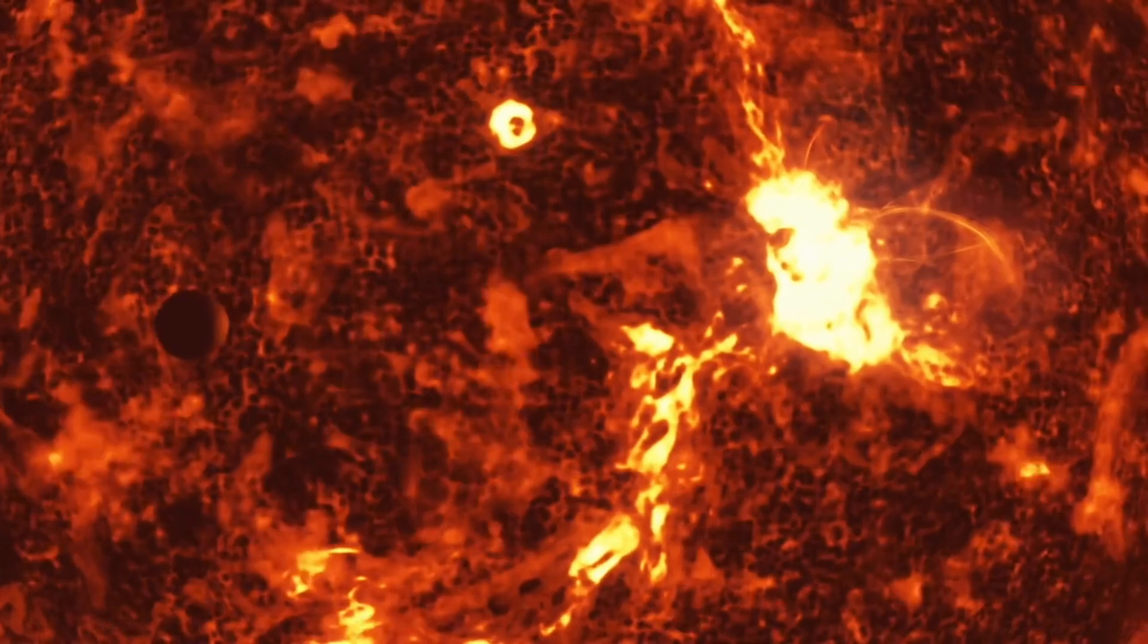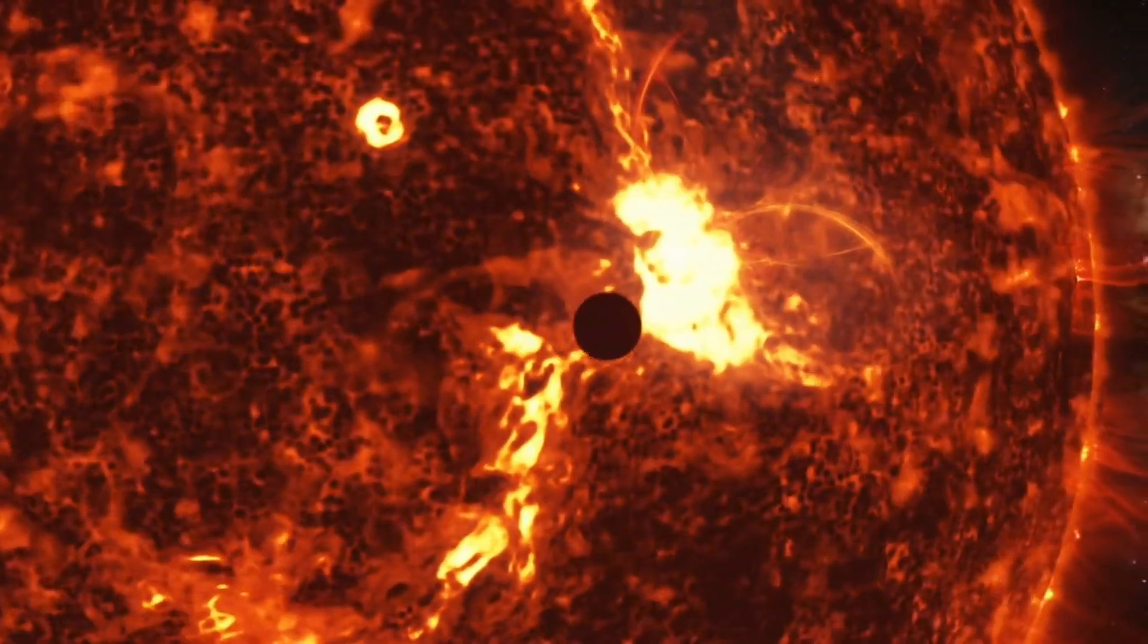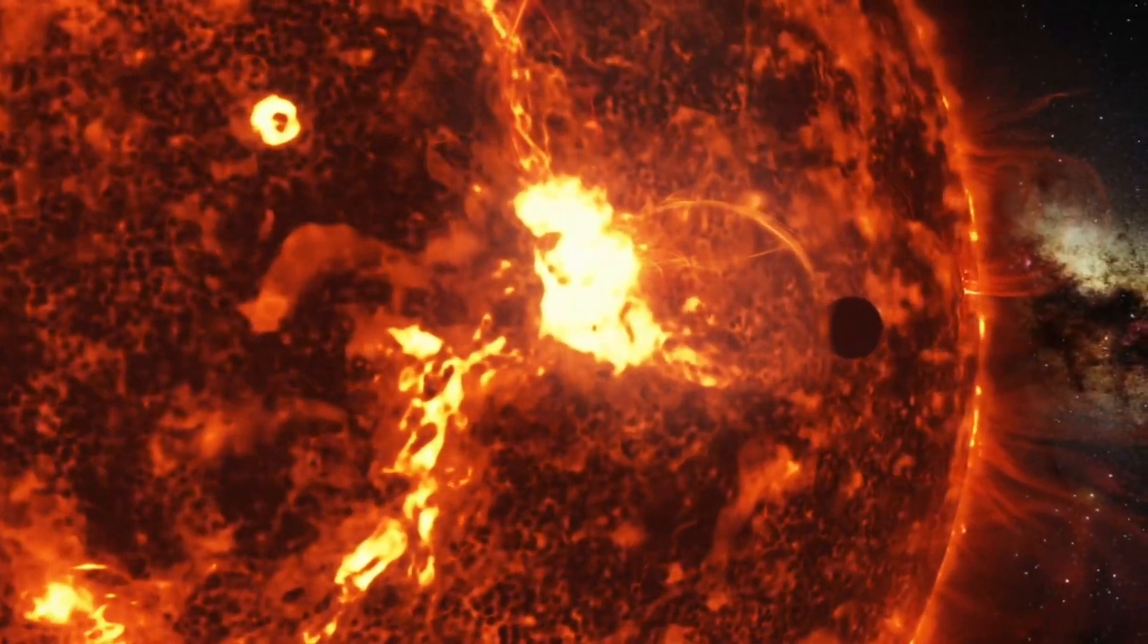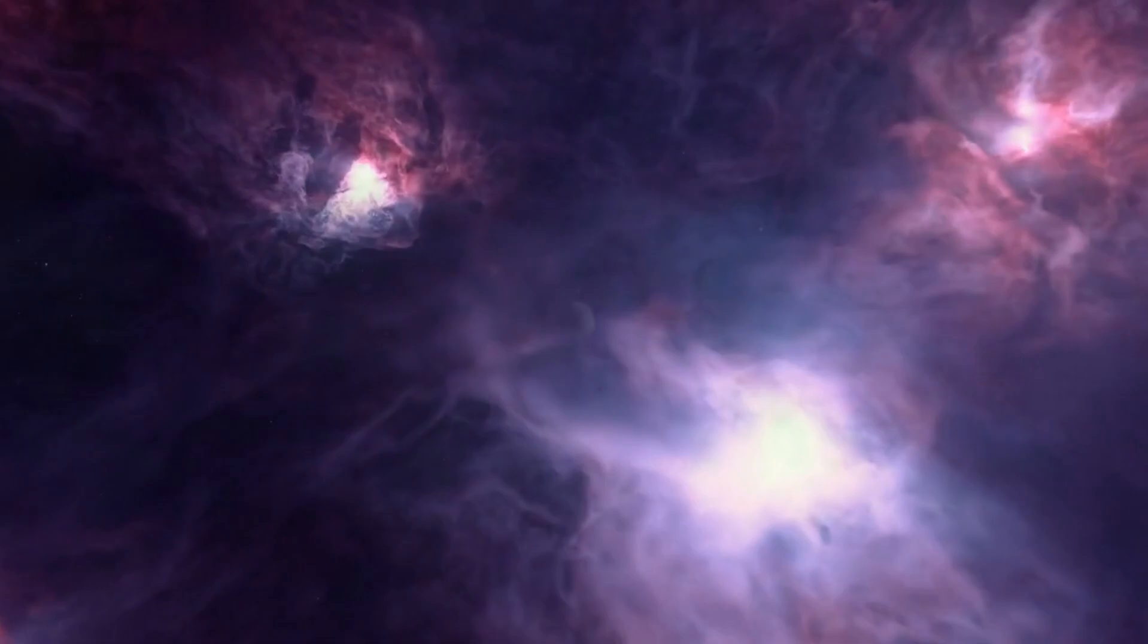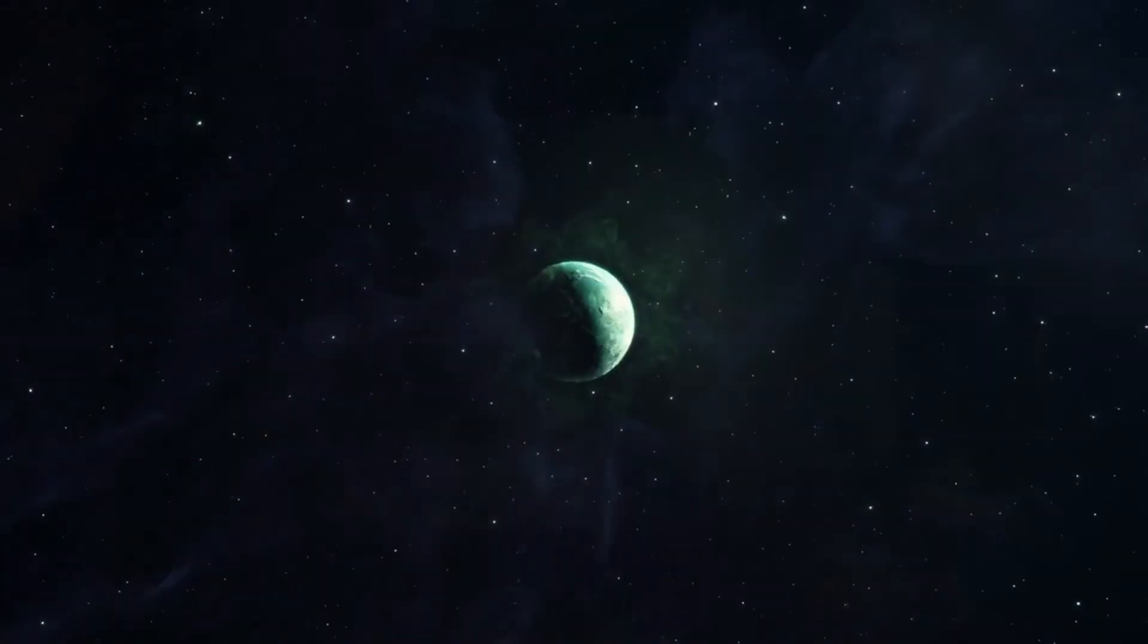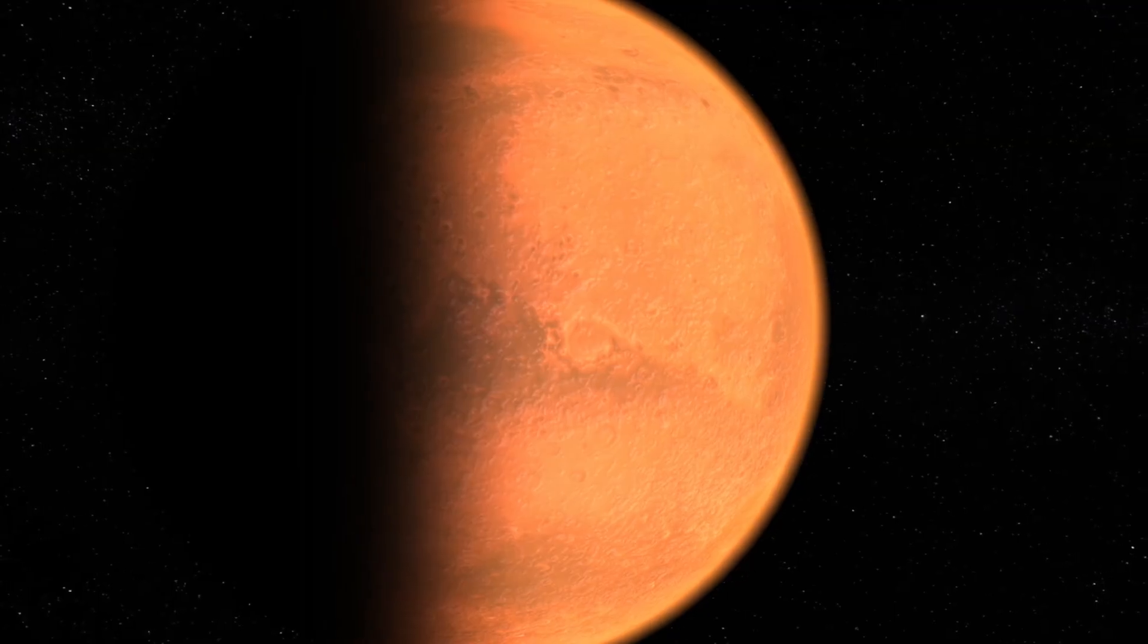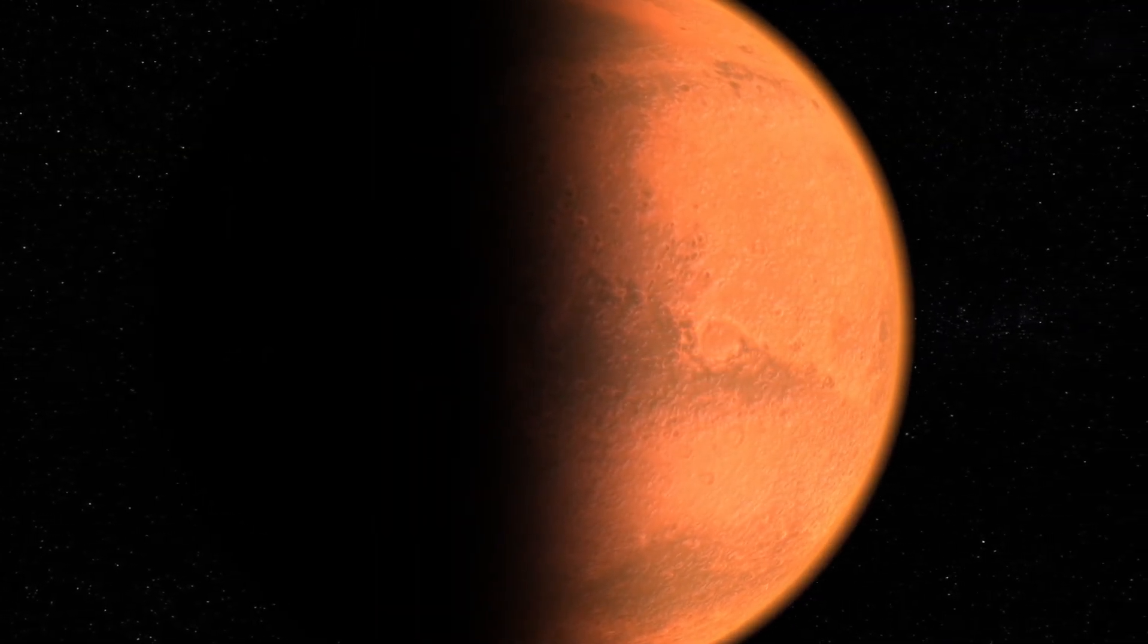How will the supernova explosion affect Earth and the solar system? Betelgeuse's supernova explosion will not have a direct impact on Earth or the solar system. The radiation and particles emitted by the explosion will disperse deep into space before reaching Earth. However, this explosion will be visible as a very bright light source in the sky, providing astronomers with a unique observation opportunity.